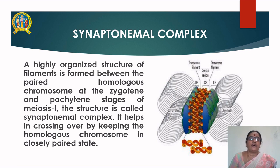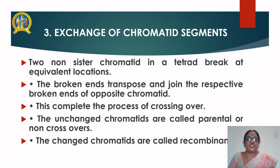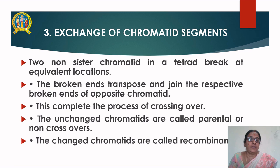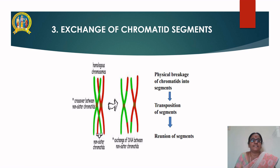The exchange of chromatid segments. Two non-sister chromatids in a tetrad break at equivalent locations. The broken ends transpose and join the respective broken ends of the opposite chromatid. This completes the process of crossing over. The unchanged chromatids are called parental or non-crossover filaments, and the changed chromatids are called recombinants. Homologous chromosomes come and lie side by side, and crossover happens between the non-sister chromatids. Exchange of DNA also takes place between the two non-sister chromatids.